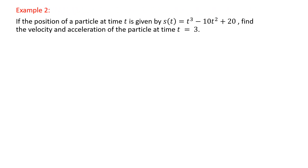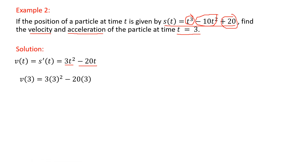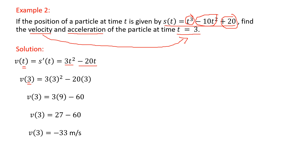Example 2: if the position of a particle at time t is given by s(t) = t³ − 10t² + 20, find the velocity v(t) and acceleration a(t) at t = 3. Velocity is the first derivative of the position function. The derivative of t³ gives 3t², the derivative of −10t² gives −20t, and the derivative of 20 is 0. Substituting t = 3 into the velocity function gives v(3) = −33 meters per second.